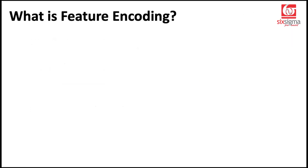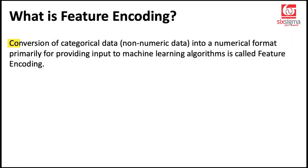So to begin with, what is feature encoding? Conversion of categorical data or non-numeric data into numerical format, primarily for providing input to the machine learning algorithms, is called feature encoding.